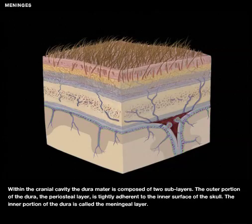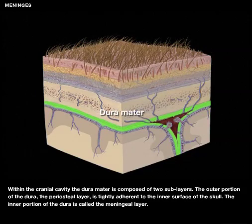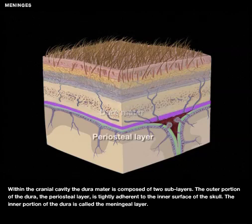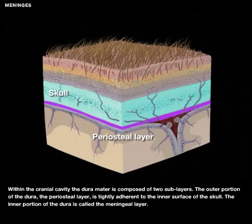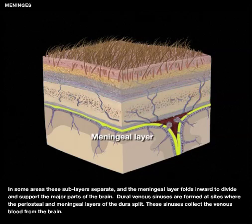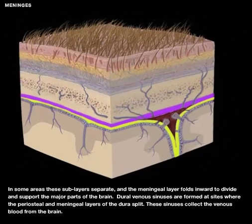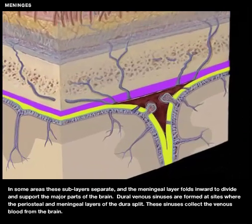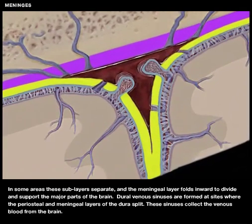Within the cranial cavity, the dura mater is composed of two sublayers. The outer portion of the dura, the periosteal layer, is tightly adherent to the inner surface of the skull. The inner portion of the dura is called the meningeal layer. In some areas, these sublayers separate, and the meningeal layer folds inward to divide and support the major parts of the brain.